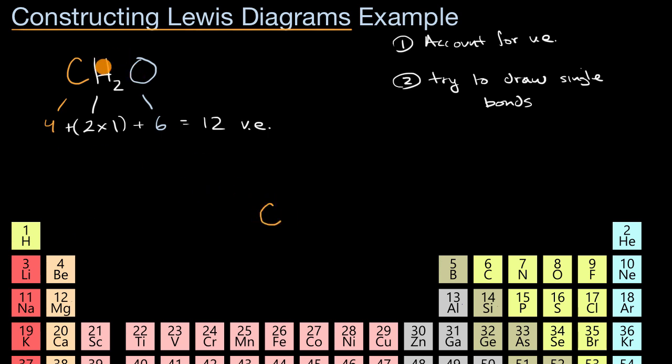And then let's put these other atoms around it. We could call them terminal atoms. So let's put our oxygen right over there. And then we have two hydrogens, a hydrogen there, a hydrogen there. And let me draw the bonds. So that's a single bond. That accounts for two valence electrons. That accounts for two valence electrons. That accounts for two valence electrons. So I've just used two, four, six valence electrons. So if I subtract six valence electrons, I am now left with six valence electrons.